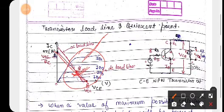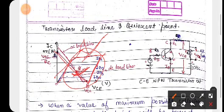This is basically what happens: the Q point should be in the middle for proper amplification. This part is the active region — this is how the transistor works as an amplifier. For better amplification, the Q point should be in the middle, then my transistor will work properly.